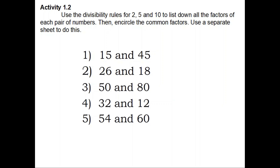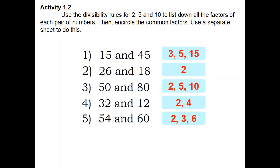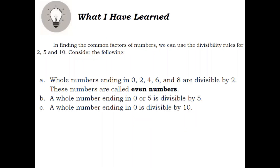Activity 1.2: Use the divisibility rules for 2, 5, and 10 to list down all the factors of each pair of numbers. Then, encircle the common factors. Use a separate sheet to do this. Number 1: 15 and 45. Answer: common factors are 3, 5, 15. Number 2: 26 and 18. Answer: common factor is 2. Number 3: 50 and 80. Answer: common factors are 2, 5, 10. Number 4: 32 and 12. Answer: common factors are 2, 4. Number 5: 54 and 60. Answer: common factors are 2, 3, 6.